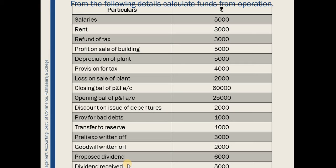Now we have to identify various non-fund or non-operating expenses. So, it includes depreciation of plant, provision for tax, loss on sale of plant, discount on issue of debentures, provision for bad debts, transfer to reserves, preliminary expenses written off, goodwill written off, and proposed dividend.